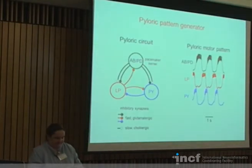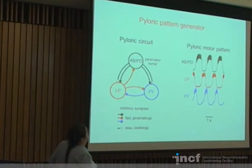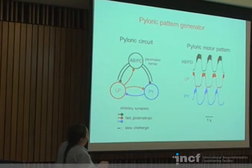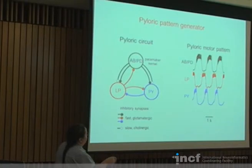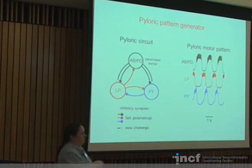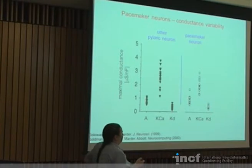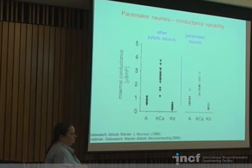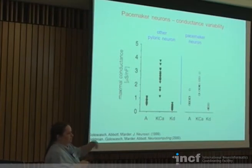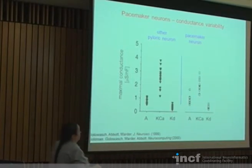Now moving into the parameter variability and ensemble modeling part. As a reminder, a lot of what will be discussed is in the pyloric system of the crab or lobster — a three-node pacemaker circuit with a pacemaker kernel that oscillates rhythmically and two types of follower neurons that also oscillate in response to inhibition from the pacemaker. There is variability in the properties of these neurons even though we're talking about identified neurons — you can find the same neuron in every animal, it generates the same rhythmic activity, innervates the same muscles, and has the same synapses with partners.